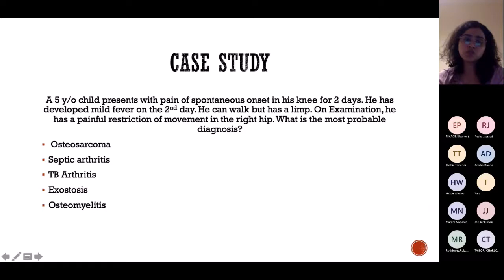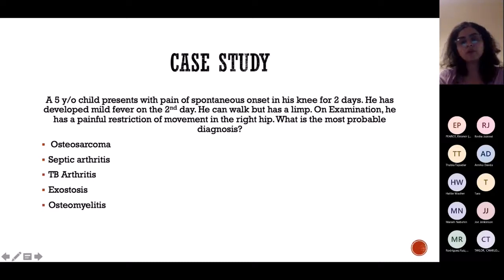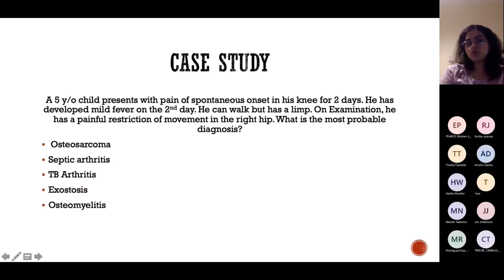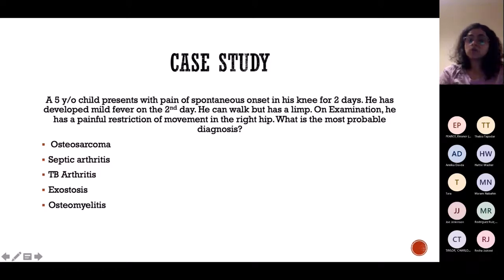Since it has an acute history, it can't be osteosarcoma or TB, which have a chronic course. With mild fever suggesting inflammation, our most common two diagnoses would be septic arthritis or osteomyelitis. Osteomyelitis is usually on the shaft of the bone, and septic arthritis is usually on the joints. Since it states the knee joint, the answer is septic arthritis.